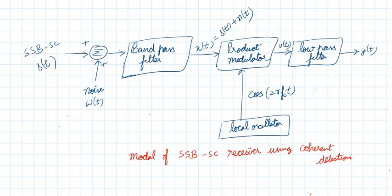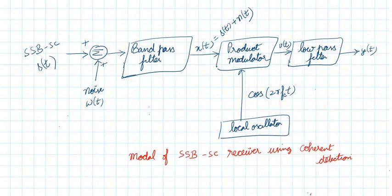Since it is coherent detection, we multiply the signal with the carrier — cosine of the carrier frequency fc. For modulation we use fc, and the same frequency is used in the demodulation part at the receiver. That is why it is called coherent detection. So x of t is multiplied with cos(2π fc t) to get v of t.